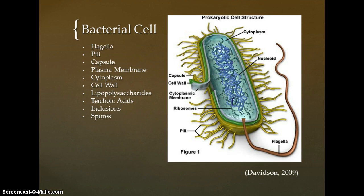In contrast, the bacterial cell shown is an example of a prokaryotic cell. As Spellman notes, prokaryotes are unicellular organisms that do not develop or differentiate into multicellular forms. While some bacteria may grow into filaments, each cell maintains its independence. Prokaryotes exist, or are capable of doing so, all across planet Earth — from our bodies to the deep oceans and everywhere in between. While there are many types of prokaryotes, perhaps the best known is the bacteria.